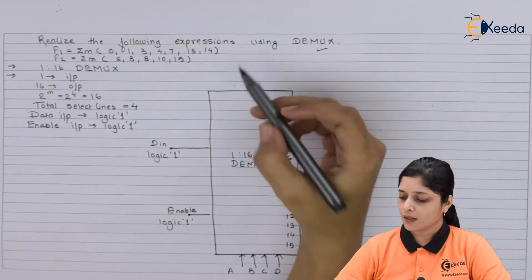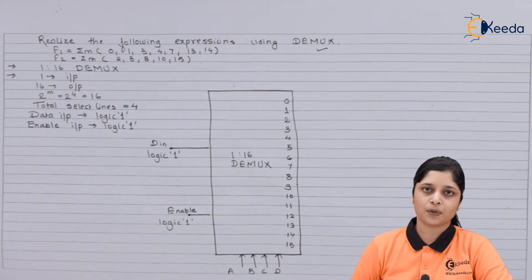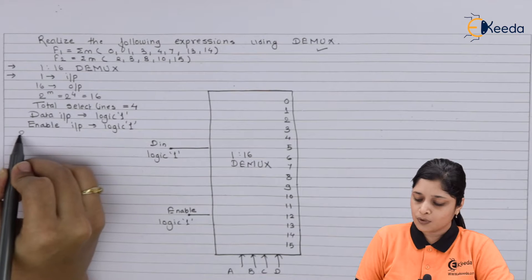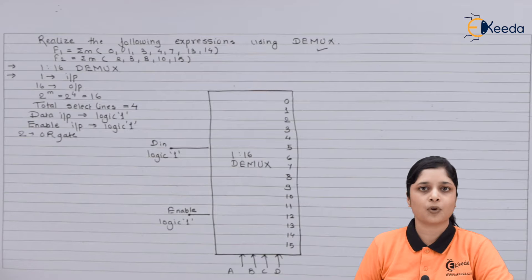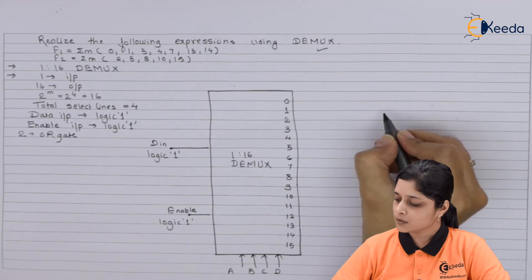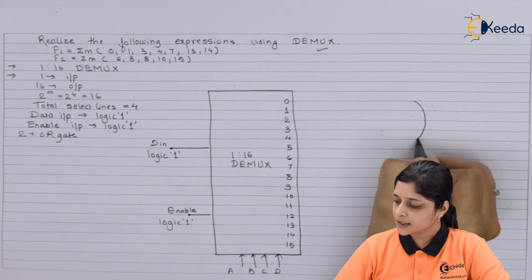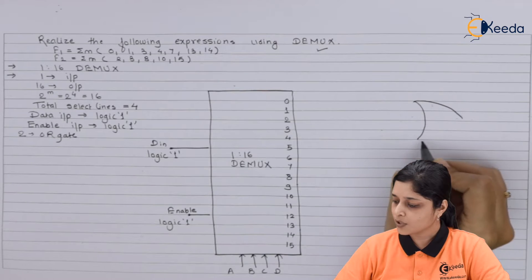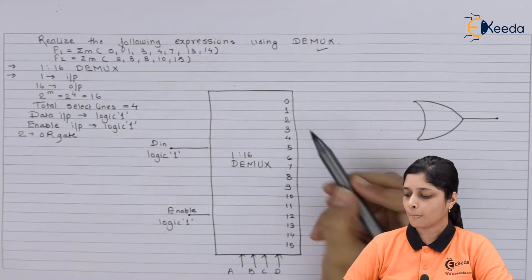Now here two functions are there for realization purpose, so two OR gates we will use for realization of the given problem. We are going to draw two OR gates. This is your first OR gate.